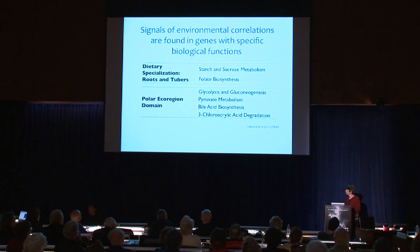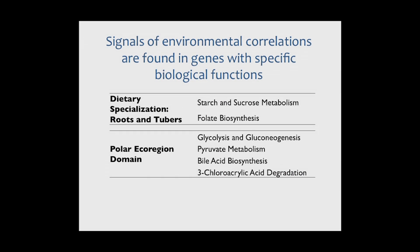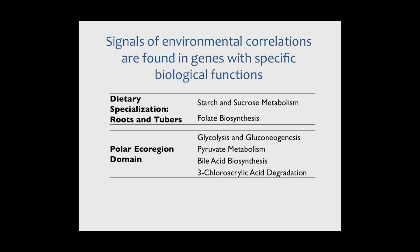Another type of analysis to learn more about the biology of these signals and increase confidence in our findings is to ask whether these signals are enriched in genes with specific biological functions. Looking at dietary specialization in roots and tubers — one of the classes with the strongest signals — the two most enriched biological pathways are starch and sucrose metabolism and folate biosynthesis, exactly what we'd expect for roots and tubers, which are rich in starch and poor in folates. With regard to adaptations to the polar ecoregion, we find several metabolic pathways involved in energy metabolism and heat production for maintaining body temperature in cold climates.